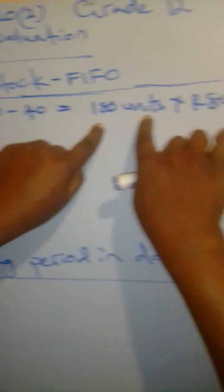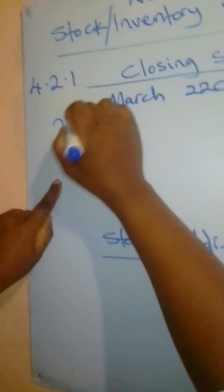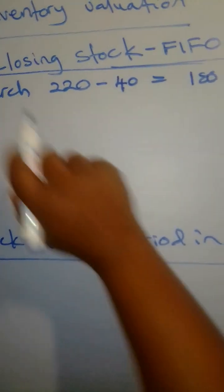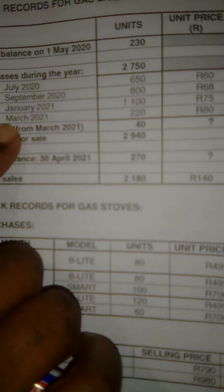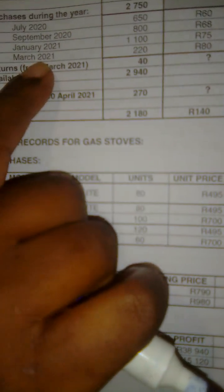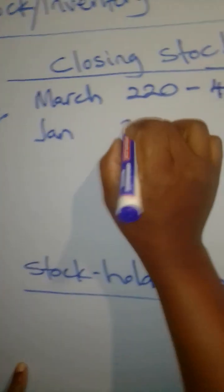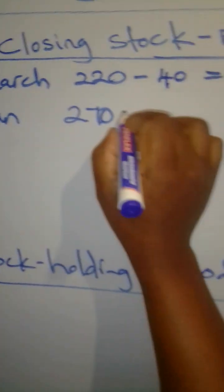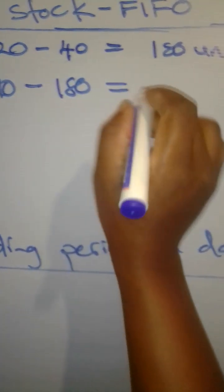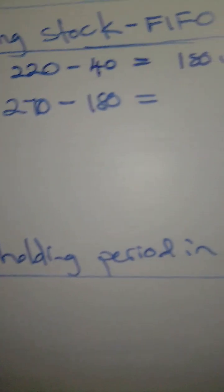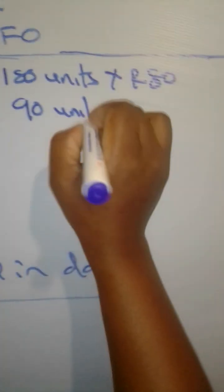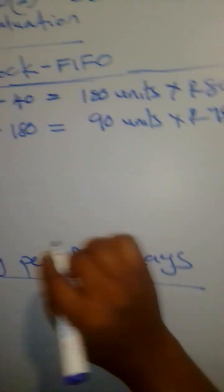Since we now have 180 units and we want to make 270, we need to go to the previous month. Which month is just before March? Looking at our table, it's January, at R75 per unit. So we take the balance: 270 minus 180 equals 90 units from January, at R75 per unit.